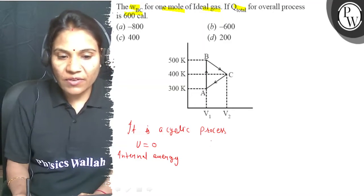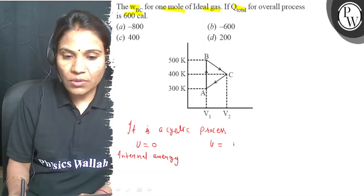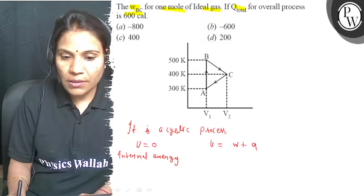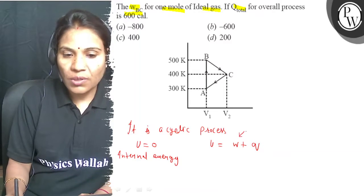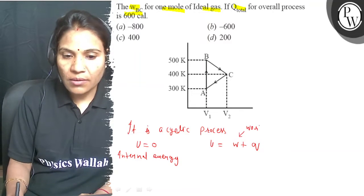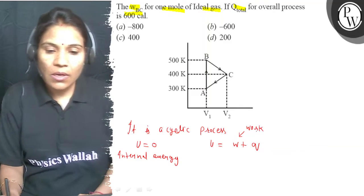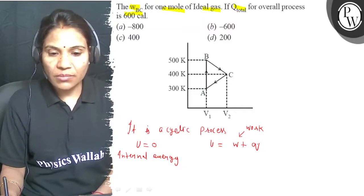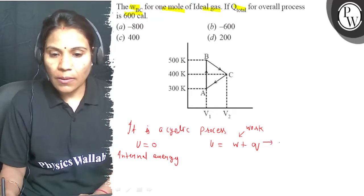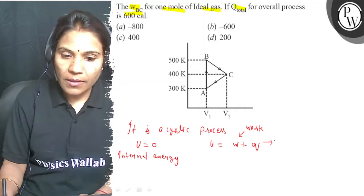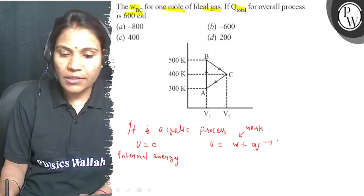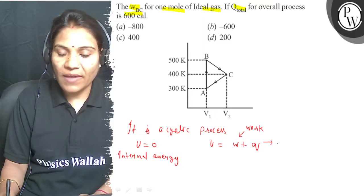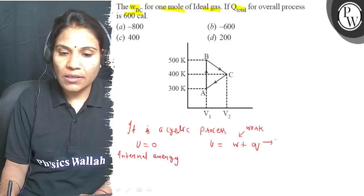And so by the equation U equals W plus Q, W is the work done by the system or on the system, Q is the heat or absorbed energy or released energy.